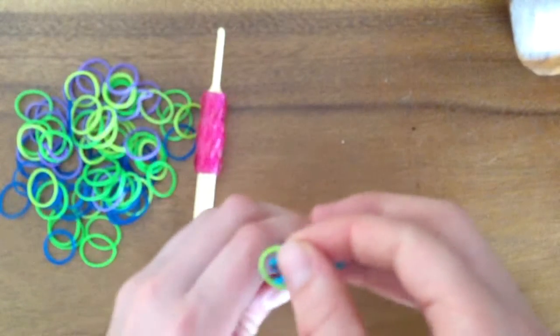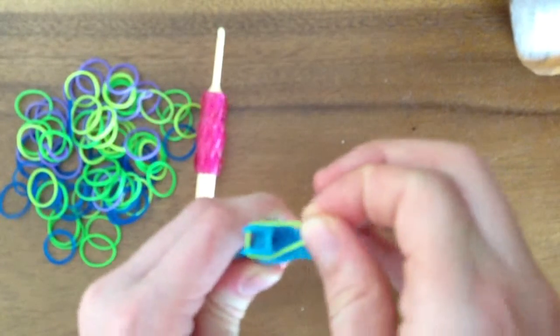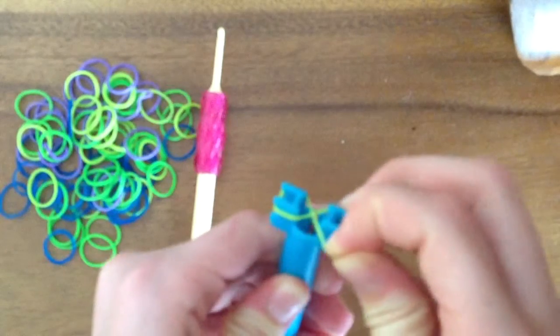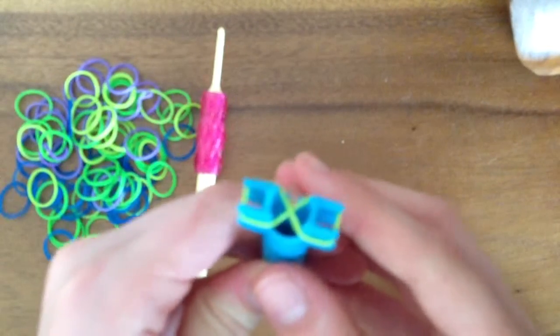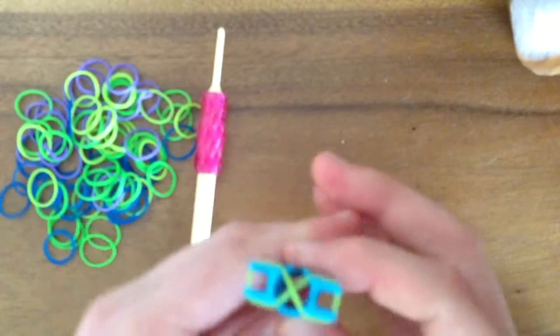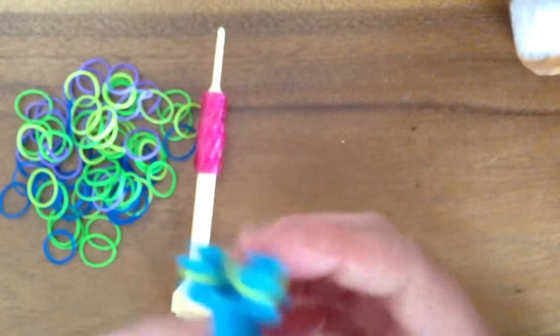I'm going to show you again. You take it, take the rubber band, twist it and place it back on the loom. So you have one twisted rubber band on your mini loom.